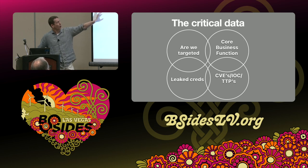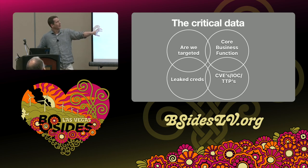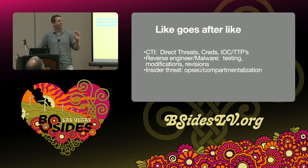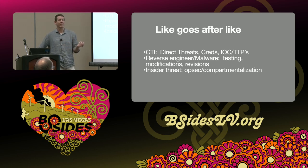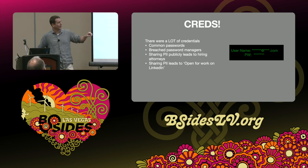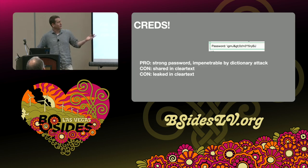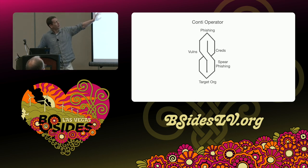The core question is: are we targeted? Are our core business functions targeted? Then: leaked credentials, and then CVEs, IOCs, and TTPs. Roughly 87% of ransomware and phishing attacks stem from compromised credentials. Using this method — if I can find that my company is targeted and core business functions are at risk — finding leaked credentials tells me exactly what to disable and turn off, lowering our risk vector. There are a lot of credentials in this data: strong passwords, password manager hits, shared in clear text. Adding a '1' at the end still isn't secure. The Conti operator works off phishing, vulnerabilities, credentials, and spear phishing to get their C2 established.